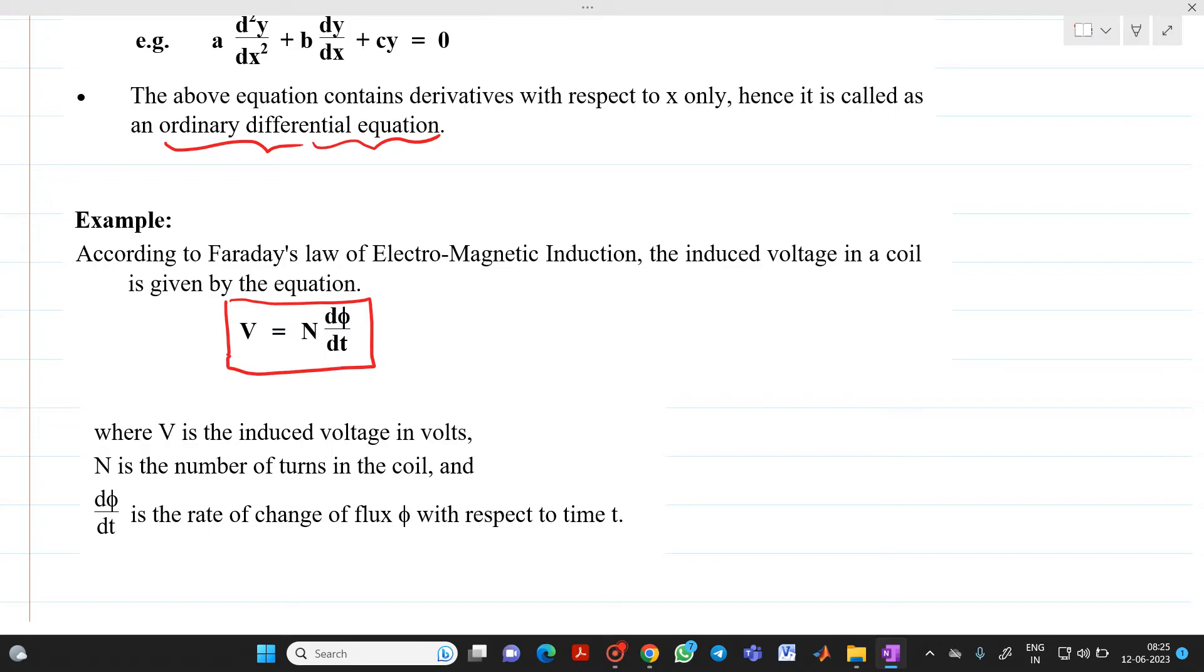Where v is induced voltage in volts, n number of turns in the coil and d phi by dt is nothing but rate of change of flux phi with respect to time.